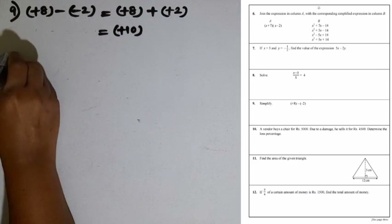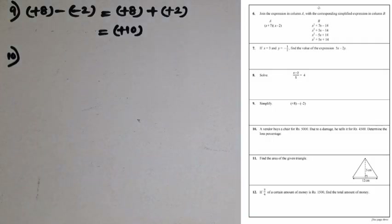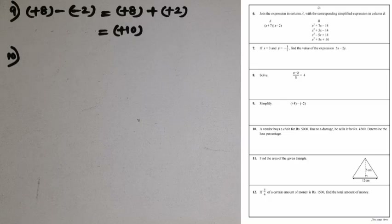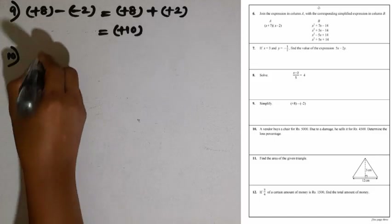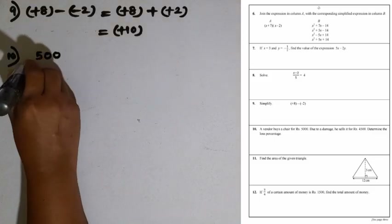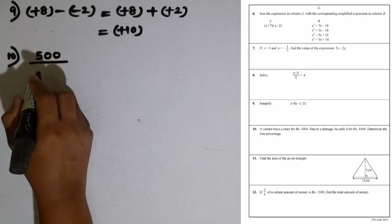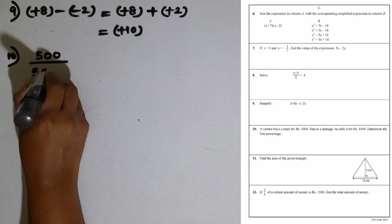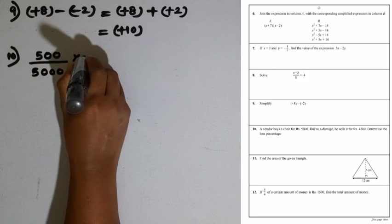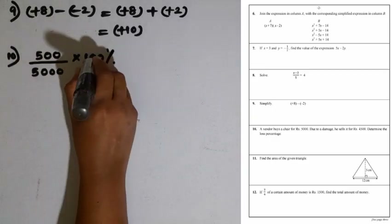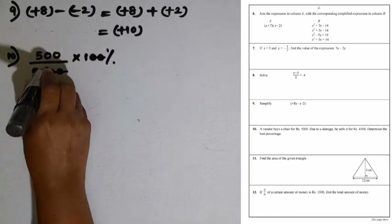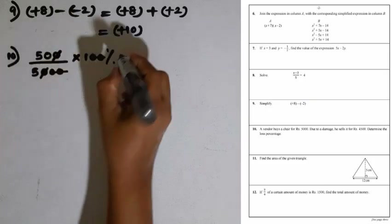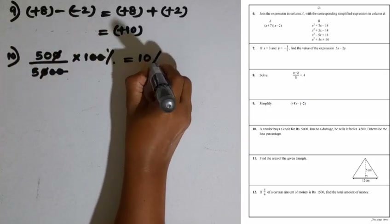Question number 10: a vendor buys a chair for 5000 rupees. Due to damage, he sells it for 4500 rupees. Determine the loss percentage. The loss is 500 rupees, which goes in the numerator. The denominator is the buying price of 5000 rupees. Multiplying by 100%, we cancel zeros: 50 divided by 5 is 10. The loss percentage is 10%.